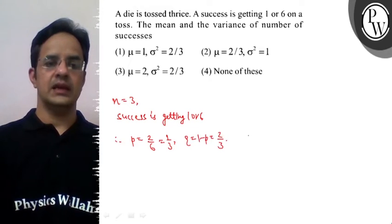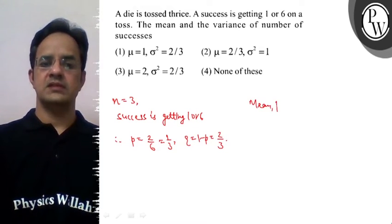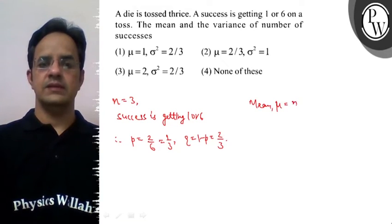The mean and the variance I will now calculate. So the mean, which is represented by μ, is given by n into p. n we have 3 and p is 1 by 3. The mean is equal to 1.